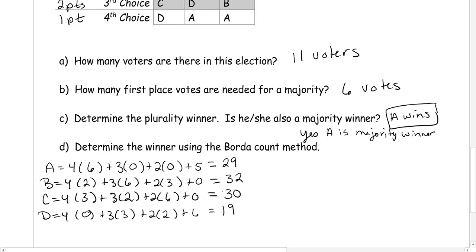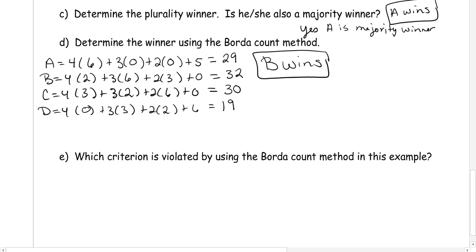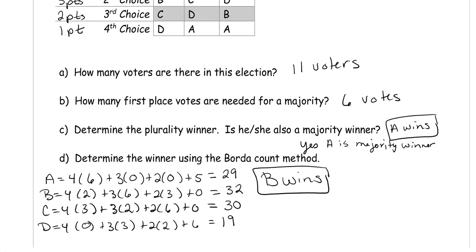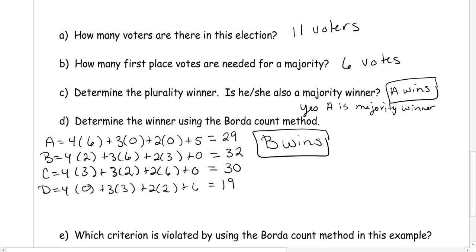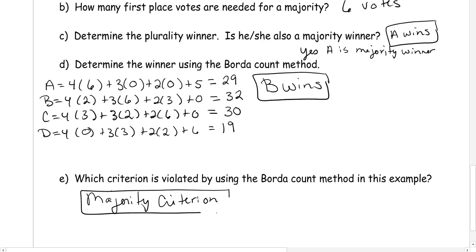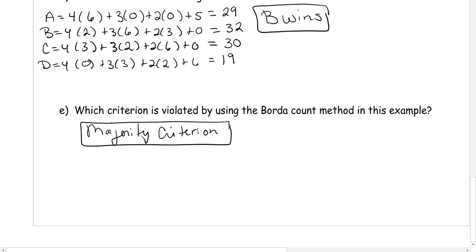So which criterion is violated using the Borda Count in this example? When we did the plurality method, candidate A won and was the majority winner — meaning candidate A had the majority of the first place votes. The criterion states that if a candidate has the majority of first place votes, that candidate should win the election. This is the majority criterion, and it is violated here by the Borda Count method. That is it for this video — let me know if you have any questions and I hope you're having a great day. Thank you.